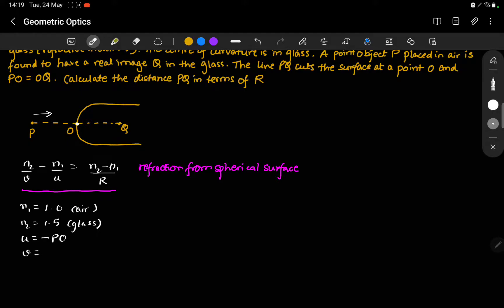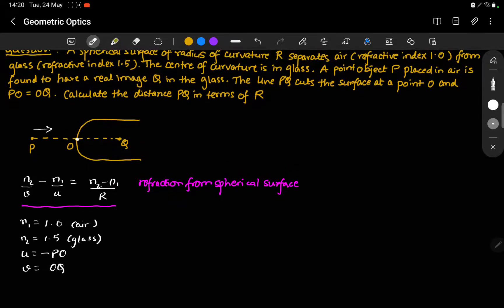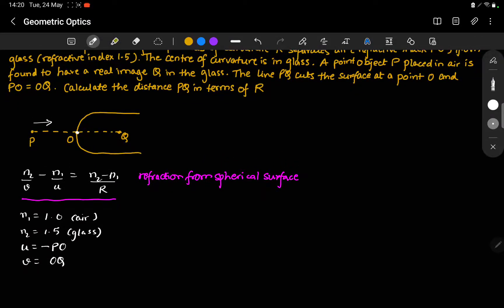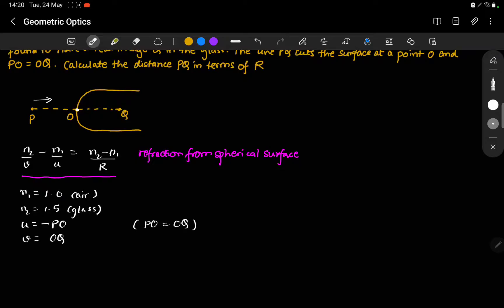And this is the origin that we are taking, this point right here. The image is formed at a distance V. V is OQ. And we are given that PO is equal to OQ. So we are given this. So let us put this in this refraction formula.